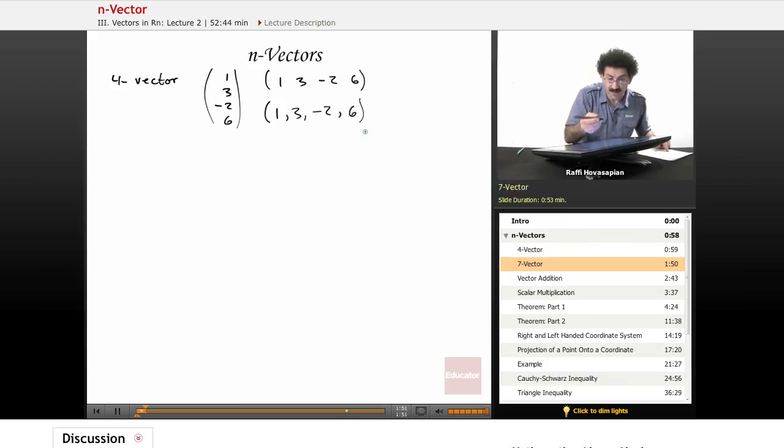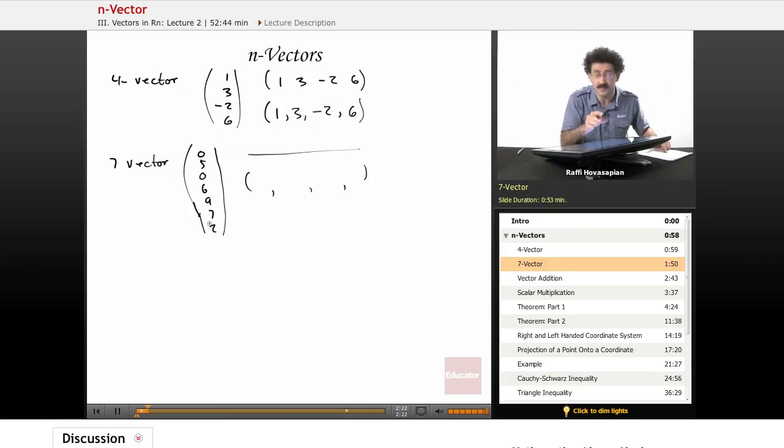Okay, a seven vector. Let's do, so you'd have zero, five, zero, six, nine, seven, two, something like that. And again, you can write it as a row. You can write it as a list in coordinate form. This just means that you have this many dimensional space. Two dimensional space is two numbers. Three dimensional space is three numbers. This is a seven dimensional space. Perfectly valid, perfectly real. And the mathematics is handled exactly the same way as it was last time.